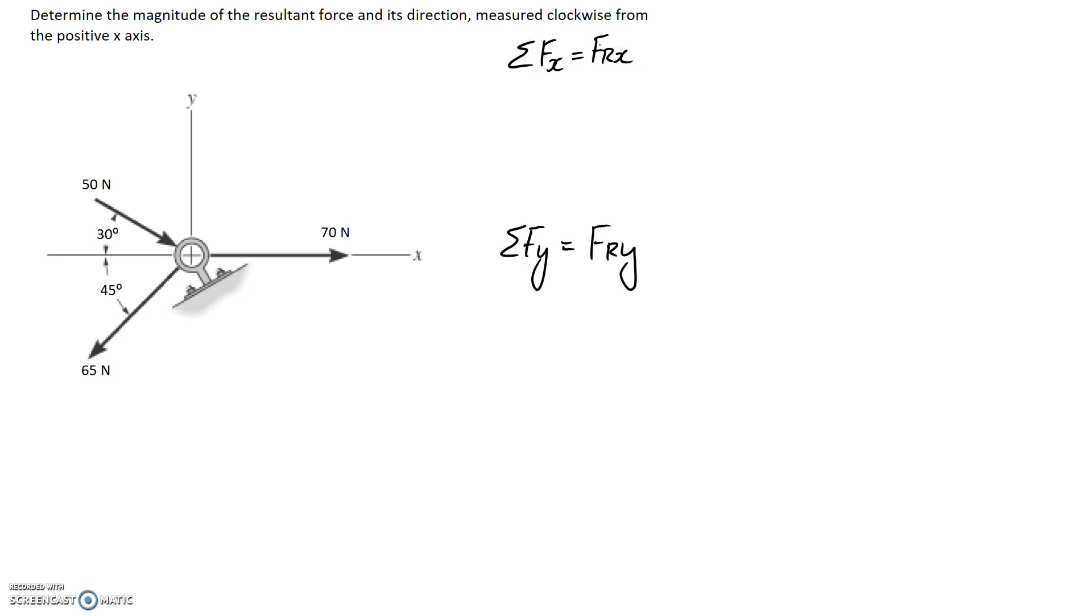Let's start with the x direction. We're going to have to split up each of these forces into x and y parts. If we start with the 50 one, the x part is going to be like this and the y part, if we make it a triangle, is going to be this side here.